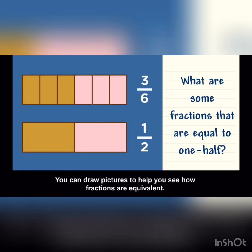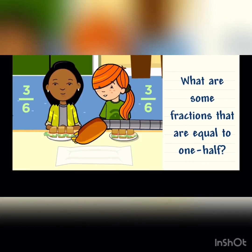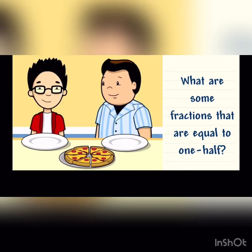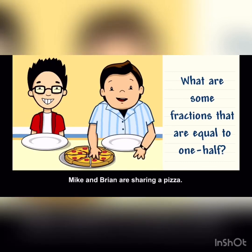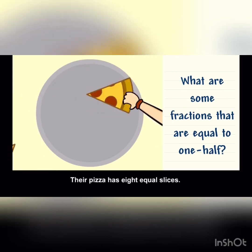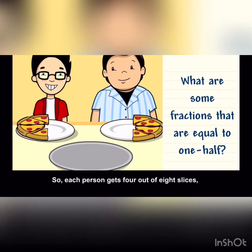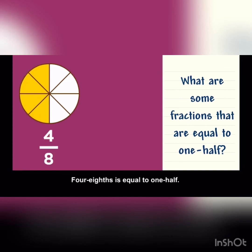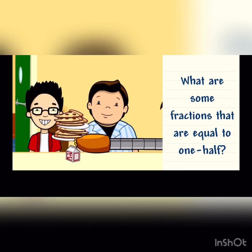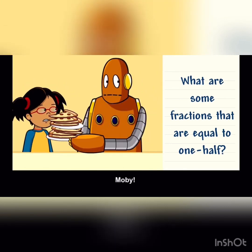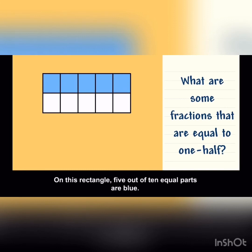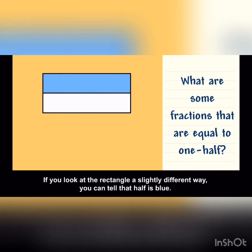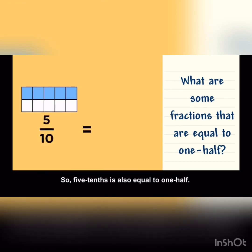You can draw pictures to help you see how fractions are equivalent. Mike and Brian are sharing a pizza. Their pizza has eight equal slices, so each person gets four out of eight slices, or four eighths of the pizza. Four eighths is equal to one half. On this rectangle, five out of ten equal parts are blue. If you look at the rectangle a slightly different way, you can tell that half is blue. So five tenths is also equal to one half.